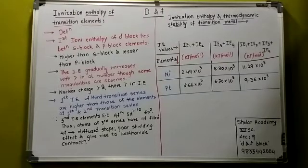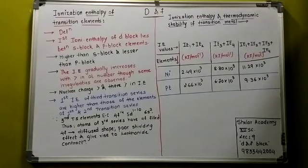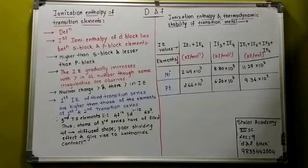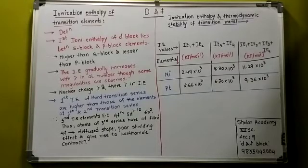The ionization enthalpy of these transition elements is in between because they are the transition metals. Their ionization enthalpy is between the S block metals on the left-hand side and the P block non-metals on the right-hand side. These elements transition in between S and P. The atomic radii and the nuclear charge of the transition elements are also in between. They have a smaller atomic radii and a higher nuclear charge compared to the S block, but the reverse trend applies for the P block elements.